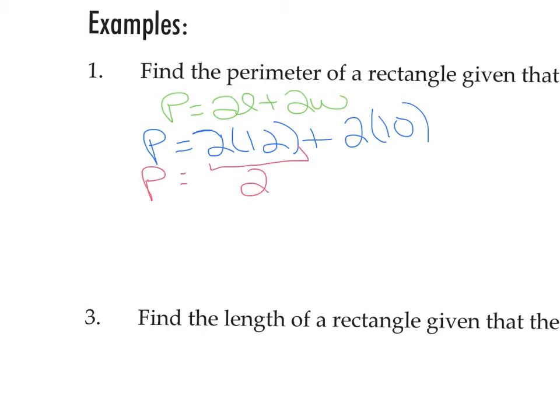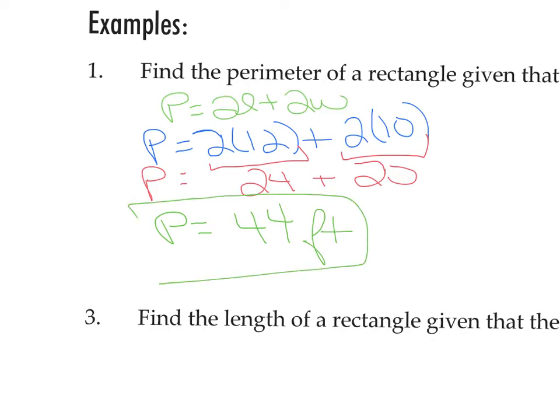2 times 12 is 24. 2 times 10 is 20. When we add the 20 and the 24, we get a perimeter of 44. The units we're working with are feet. So 44 feet.